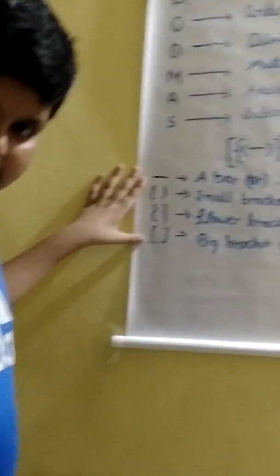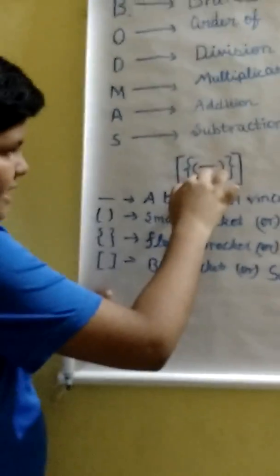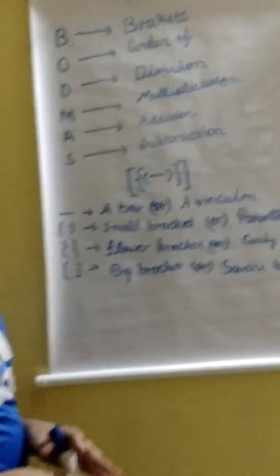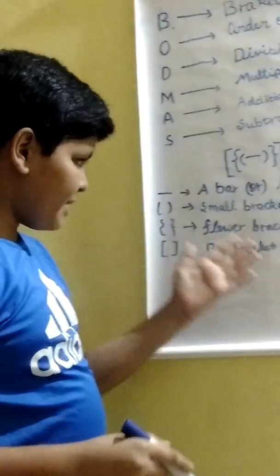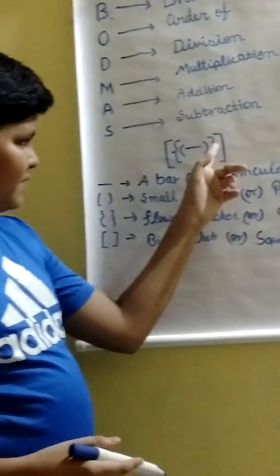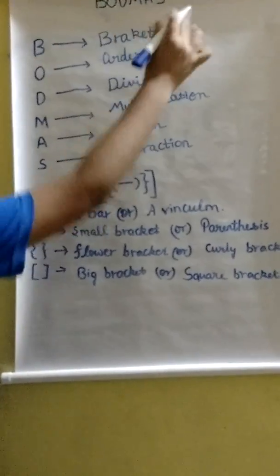These are the brackets. If we get into a problem, first we have to simplify the vinculum. If the vinculum is not there, we have to simplify the next one, parenthesis. If the parenthesis are also not there, the next one we have to simplify the curly bracket. Next, the square bracket. These are the brackets.